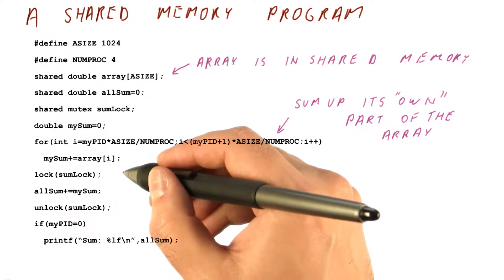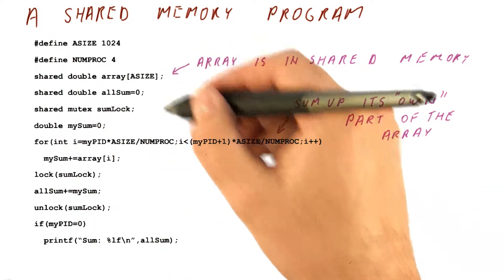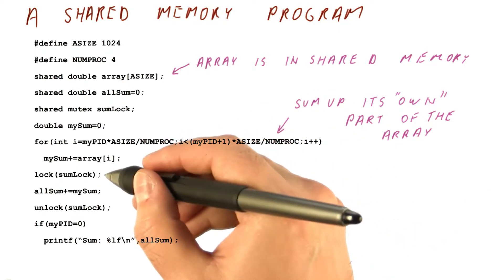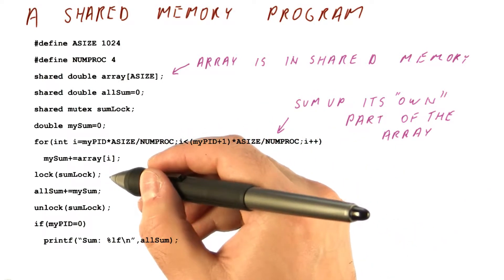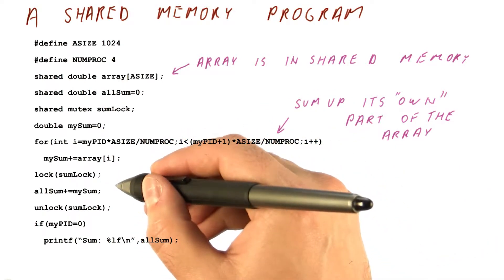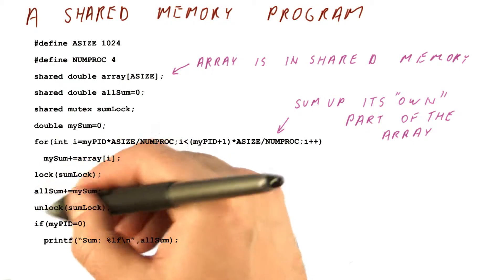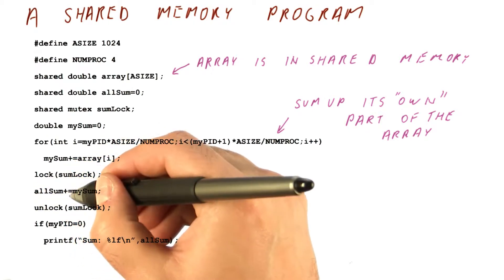The big difference occurs not only here where we are actually able to just access the part of the array we want, but also in how we can compute the sum. Instead of having to explicitly send the elements of the array to one of the cores, here each core can access the allSum variable to compute the final sum.